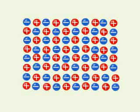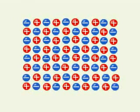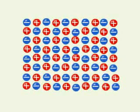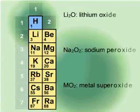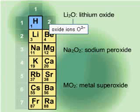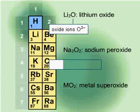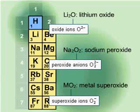All these compounds form ionic crystal lattices consisting of metal cations and appropriate anions. Oxides as crystals contain oxide ions O2-, peroxides have peroxide anions O2 2-, while superoxides contain superoxide ions O2-.